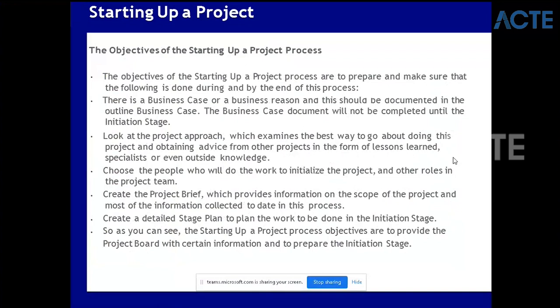Generally a business case is not more than two to three pages, otherwise people will not read it, so try to keep it very short, precise, and concise. Then look at the project approach and choose the people you would like to work with to initiate the project. If the project is looking good, you will try to see if there are people available. Sometimes the project is viable but there is no resource availability, so that is also important to check.